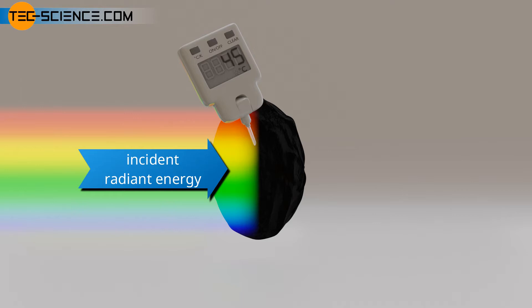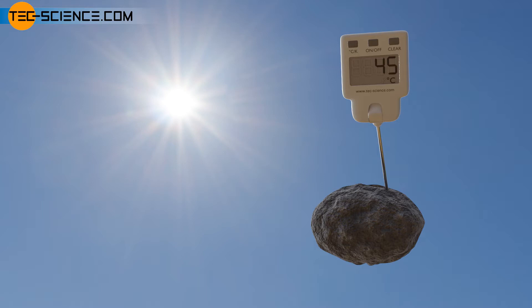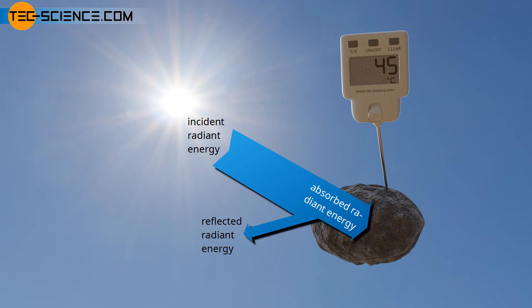As long as a blackbody is irradiated and absorbs energy, its temperature would have to rise steadily. However, experience shows that objects placed in the sun and thus irradiated do not heat up permanently. As long as the radiation is even partially absorbed, the temperature should rise steadily due to the permanently absorbed radiant energy. In reality, however, one notices that the temperature of irradiated objects does not rise permanently. At some point a thermal equilibrium will be established, and this also applies to black-painted objects, which can be regarded as ideal blackbodies in very good approximation.